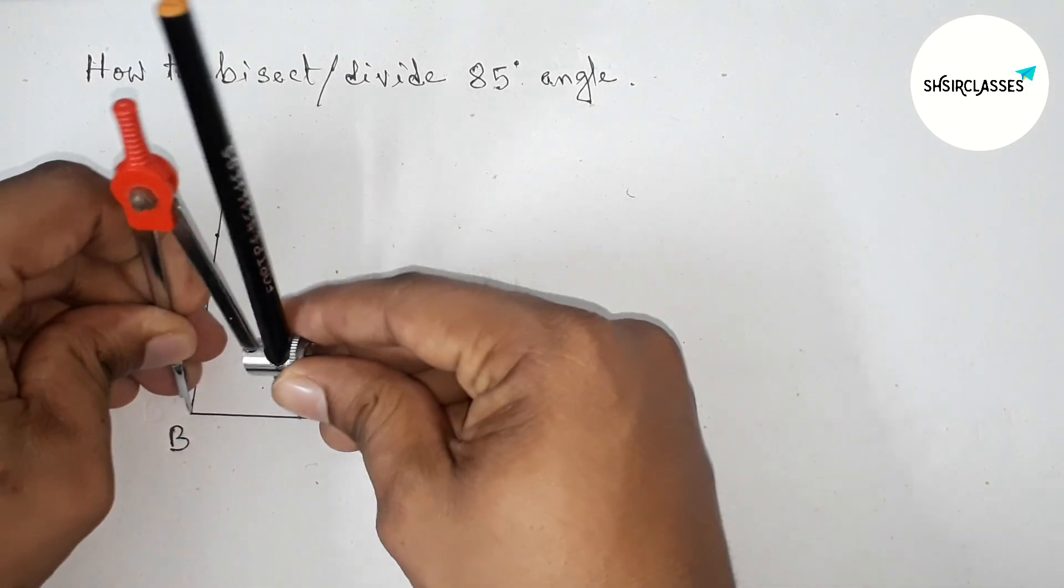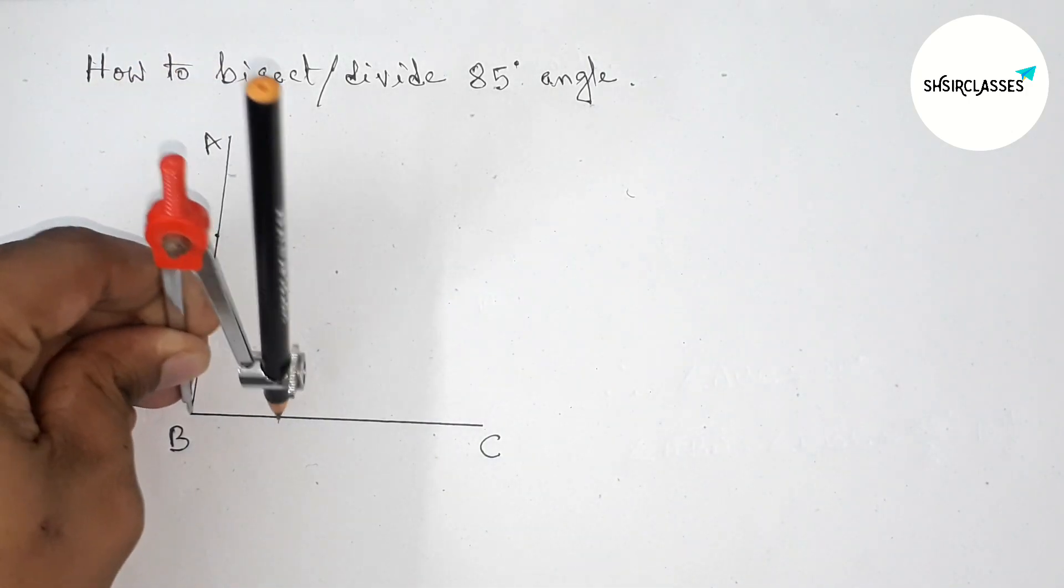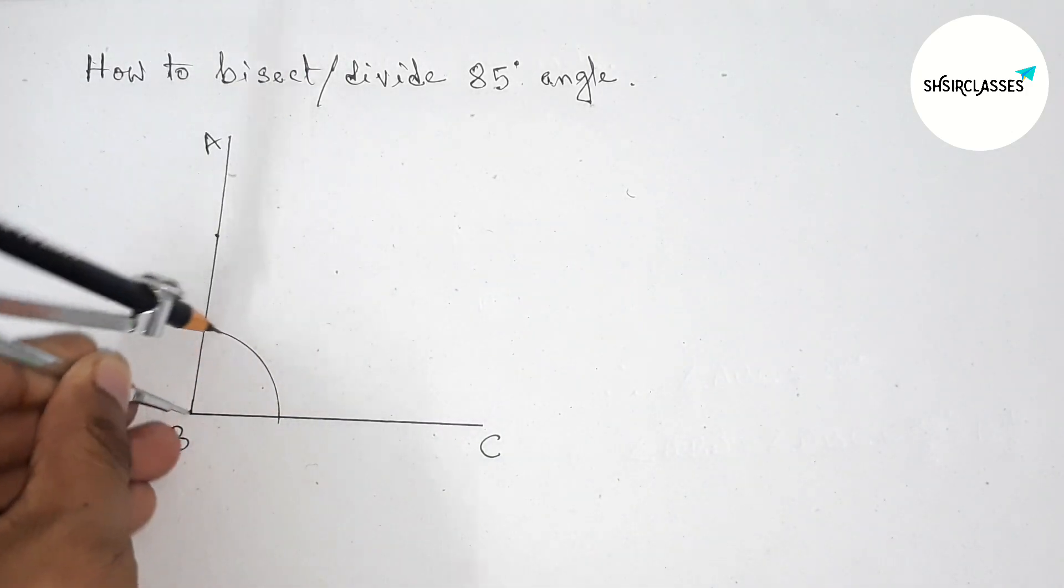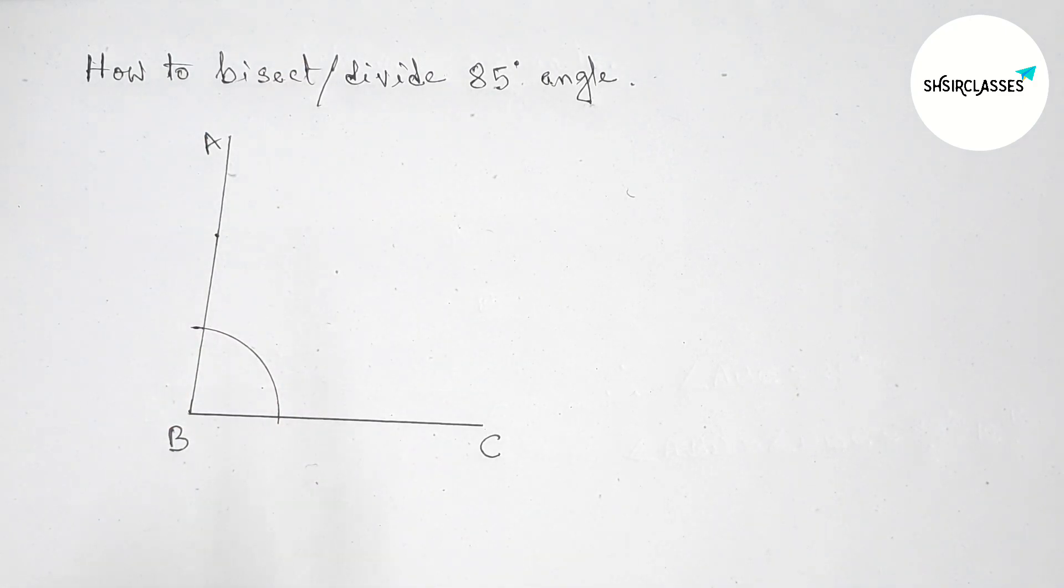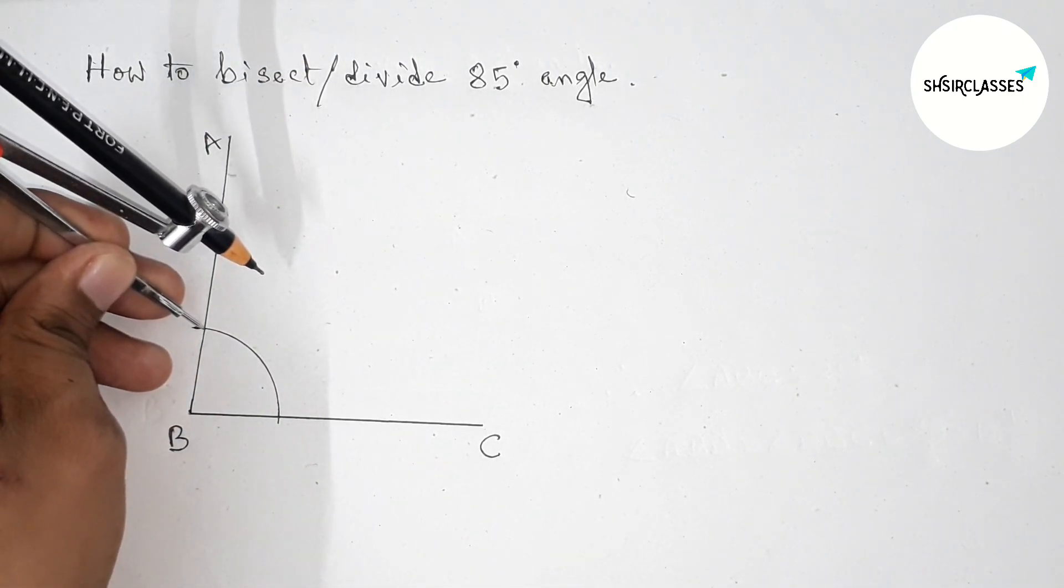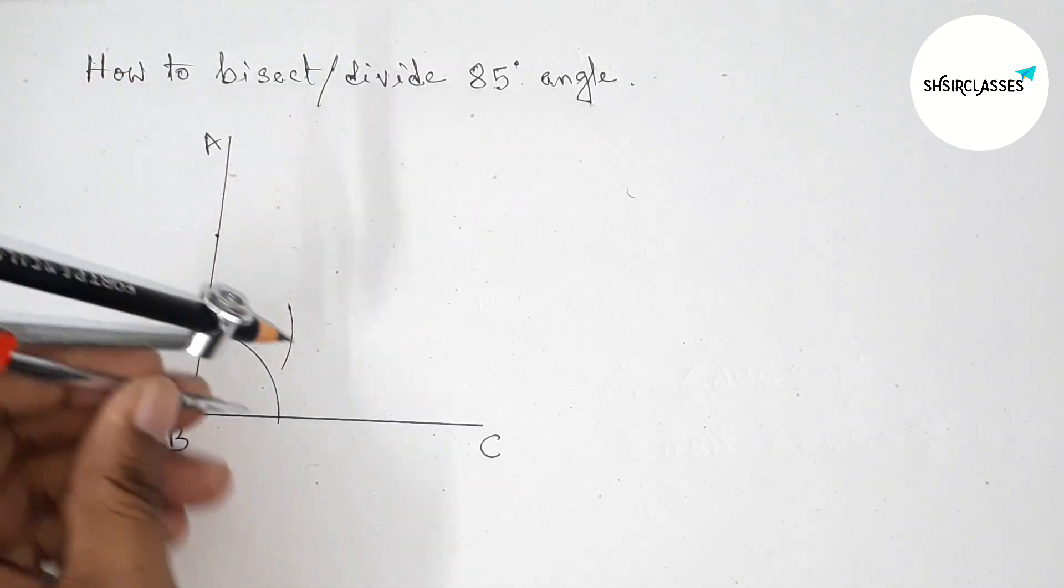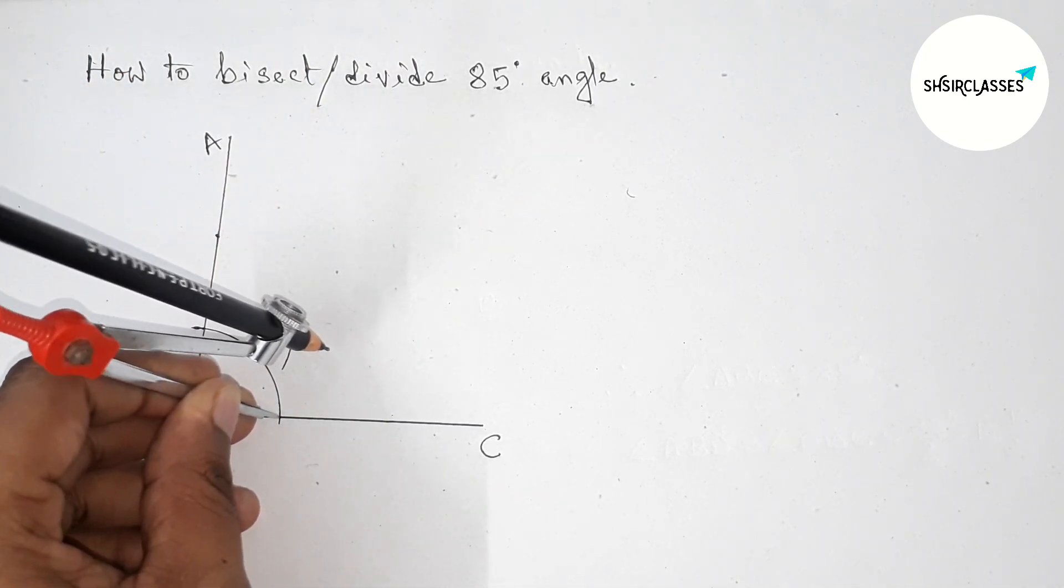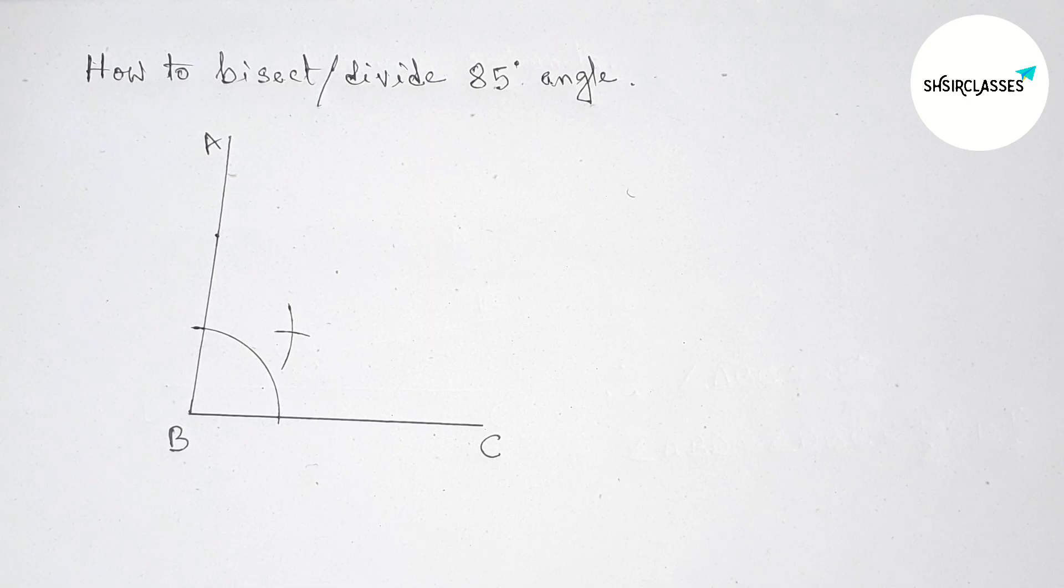First drawing here an arc by this way. Next putting the compass here with same length and drawing arc here, and putting the compass here and cut here.